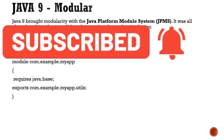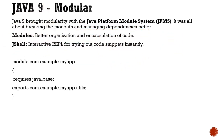Java 9 is also an important release. If you have heard of modular programming, this is one of its key features. In Java 9, you can break down your monolithic application and dependencies in a better way using modules, resulting in better-organized and more encapsulated code. Apart from that, JShell was introduced — an interactive REPL for trying out code snippets. In the module code snippet, you define a module name, specify 'requires' for dependencies, and use 'export' for what is exposed.